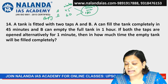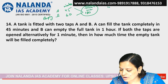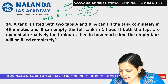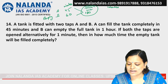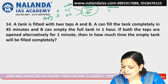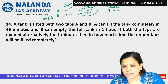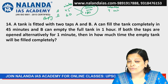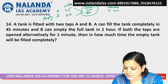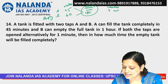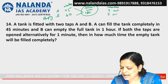A takes 45 minutes to fill it, so in one minute A fills 180 divided by 45, which is 4 units. B empties it in 60 minutes, so B empties 180 divided by 60, which is 3 units per minute.